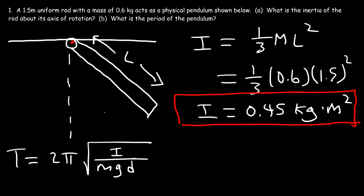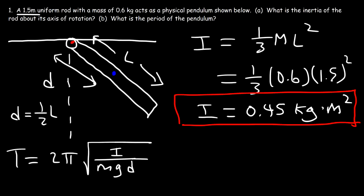D is the distance between the axis of rotation and the center of gravity, shown here in this example. Because we're dealing with a uniform rod, we assume the mass is distributed uniformly, so the center of gravity is at the middle. Therefore D is half of L. If L is 1.5, then D is 1.5 divided by 2, or 0.75 meters.